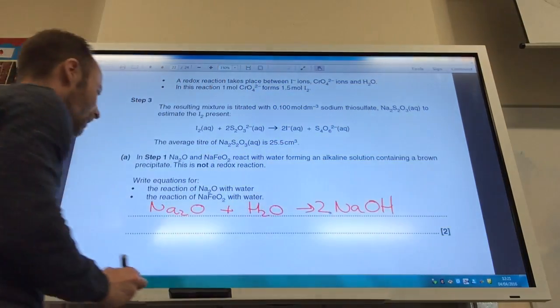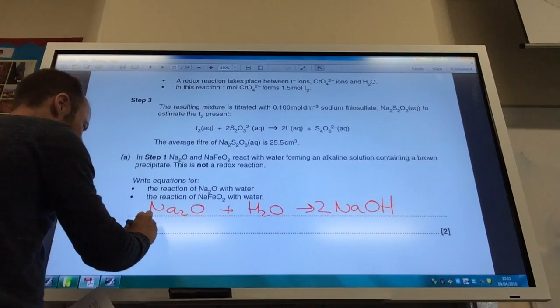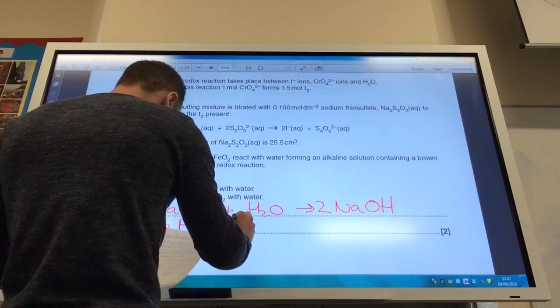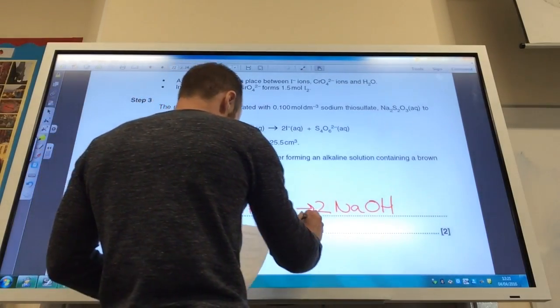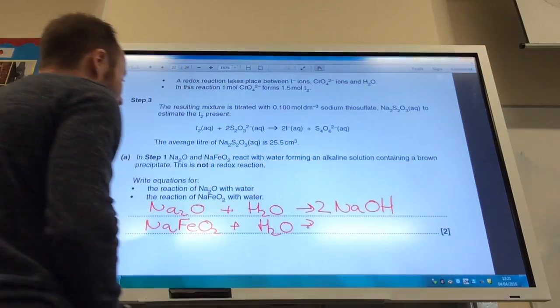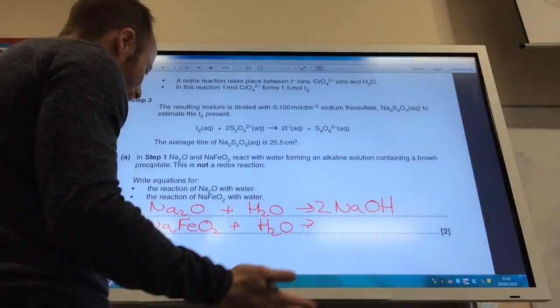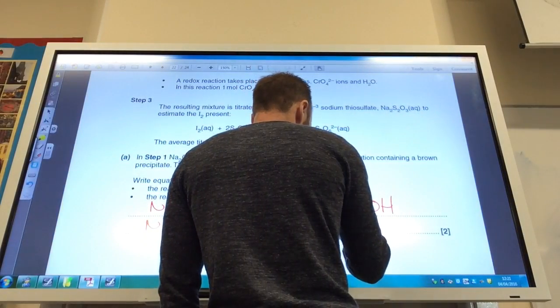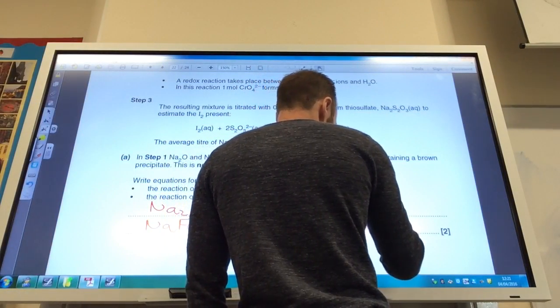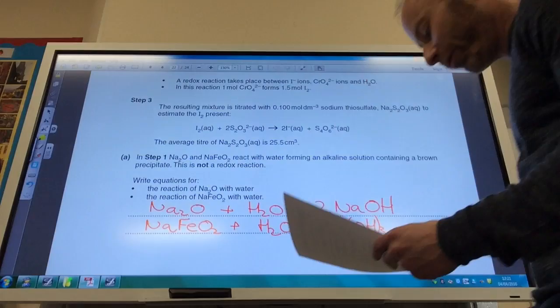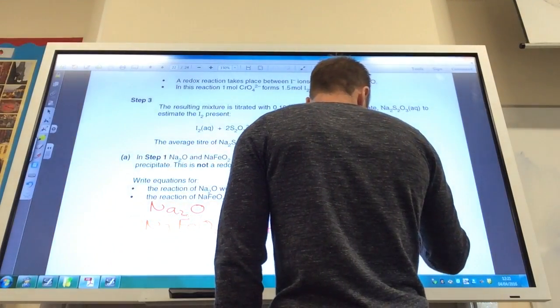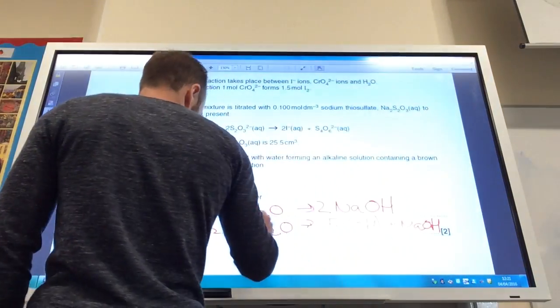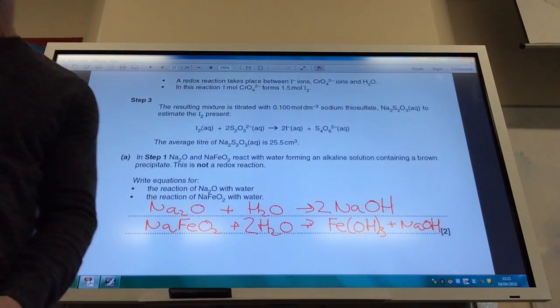And the reaction of NaFeO2 with water is going to produce a brown precipitate. What could the brown precipitate be? Well you should know from your transition chemistry and it's likely to be FeOH3, iron-3-hydroxide and again it's an alkaline solution so NaOH gives you your alkaline solution and to get that to balance you need two waters like so.